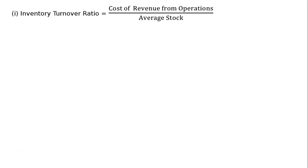This is question 133, miscellaneous. We have been given information and we are required to calculate inventory turnover ratio, gross profit ratio, and operating ratio. Inventory turnover ratio is equal to cost of revenue from operations upon average stock.